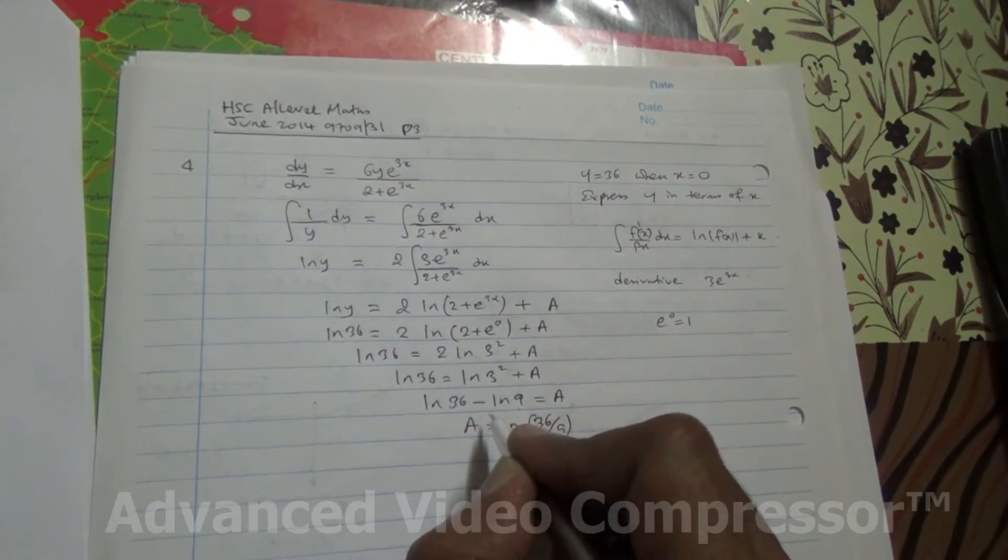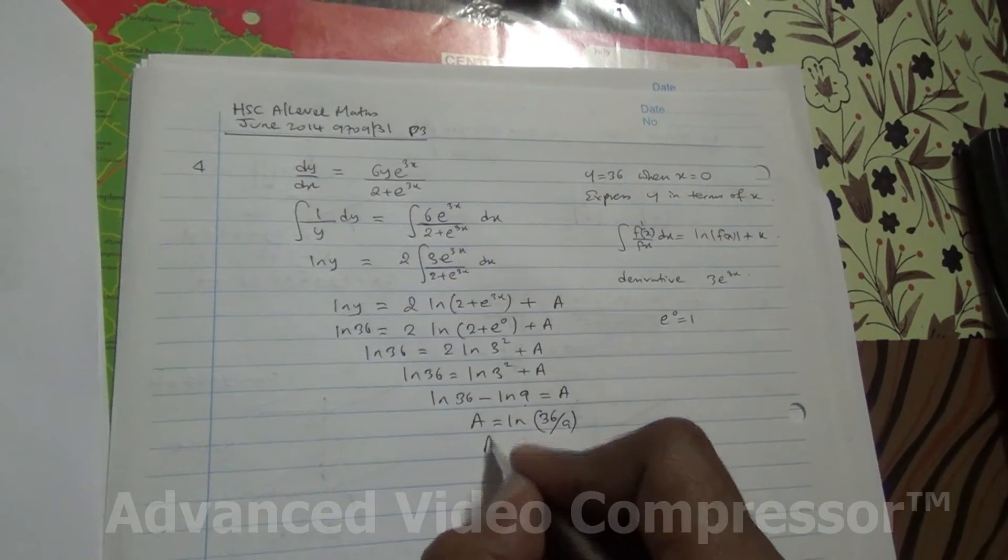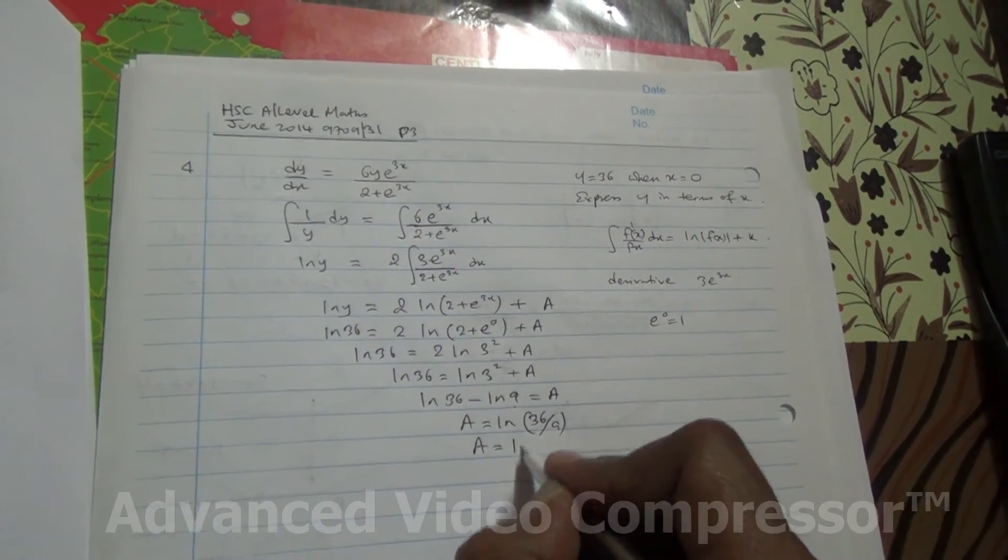a is going to be ln 36 divided by 9. The property of logarithm here is negative, so we're going to take division. Therefore, a is going to be ln 4.